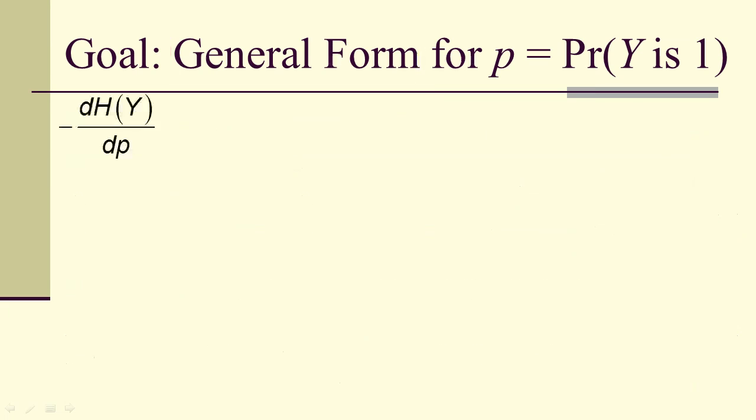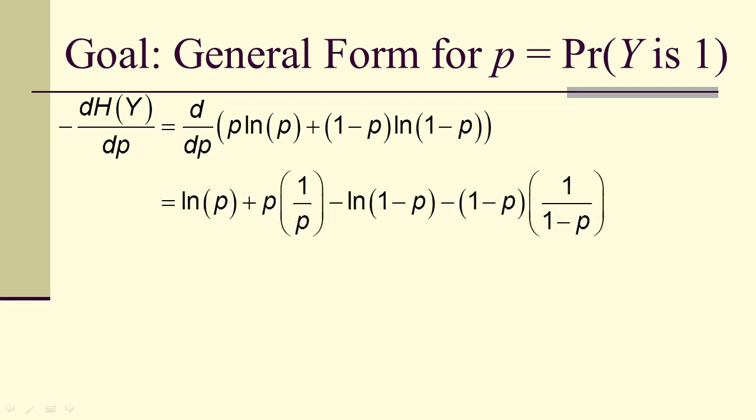So now we want to look at what does this derivative look like? Well, we're going to use the product rule and the chain rule. So we use the product rule on both of the sums, or both the factors in the sum. And, of course, the derivative of P is 1. Derivative of log P is 1 over P, so on and so forth.